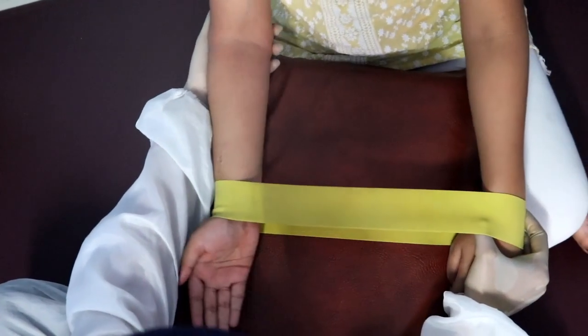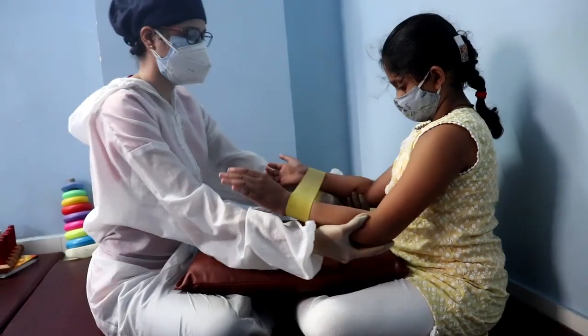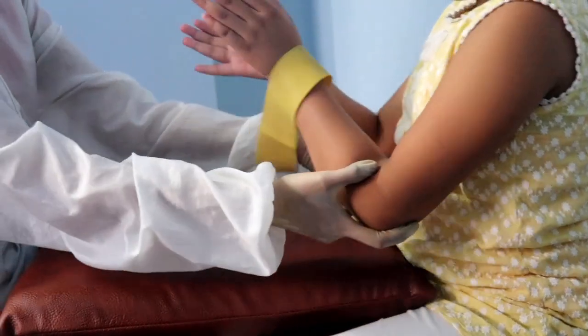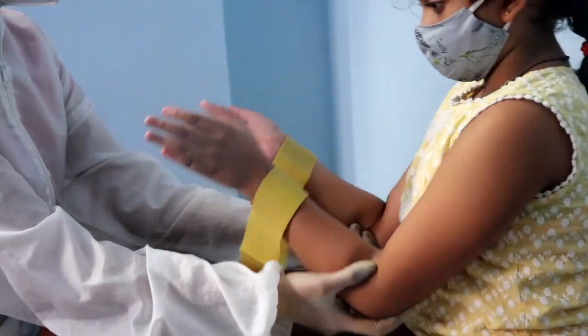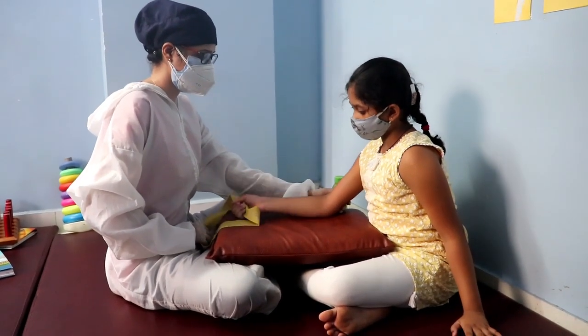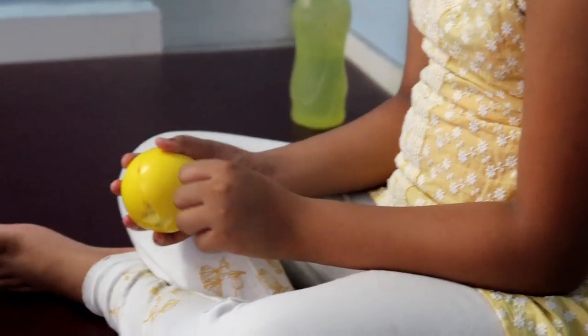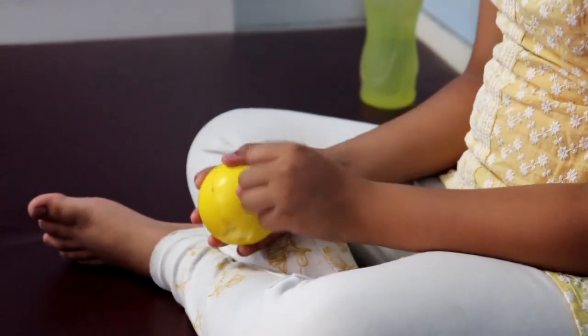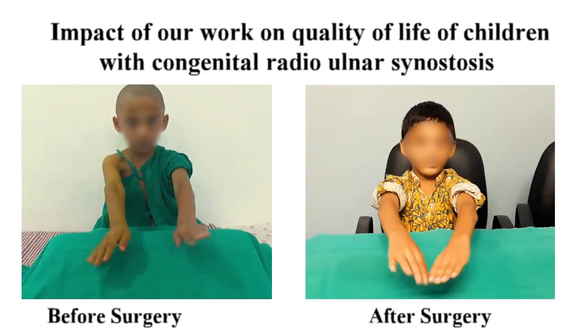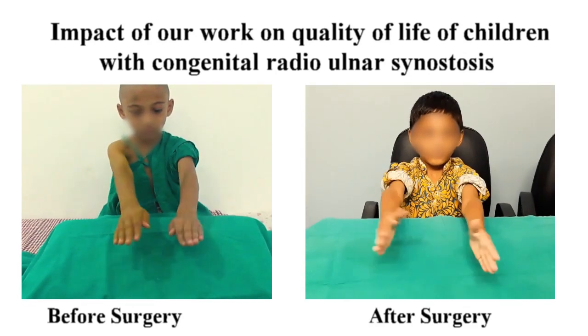As a physiotherapist, we enable the child to overcome his functional limitations. Our main concern is the activities which he cannot do prior to the operation. We design an exercise program that is suitable to the child. We also prescribe a home program which the child can carry out at home with his family. It is suggested that the child carries out exercises on a regular basis for a long time until he is able to achieve what he could not do before. So it is more of a functional surgery.